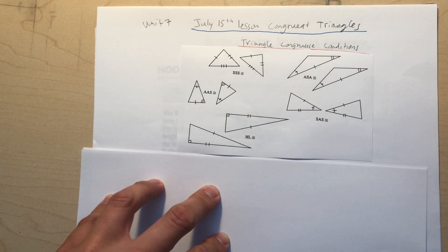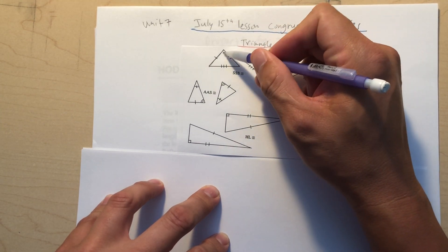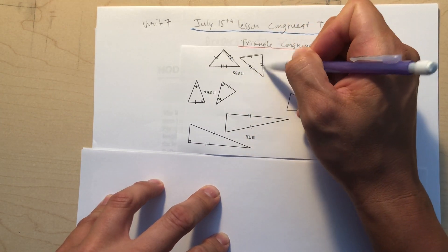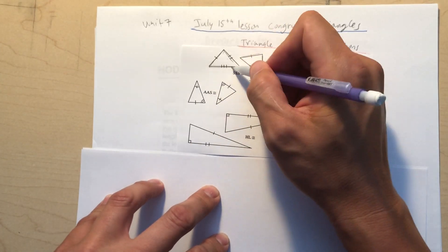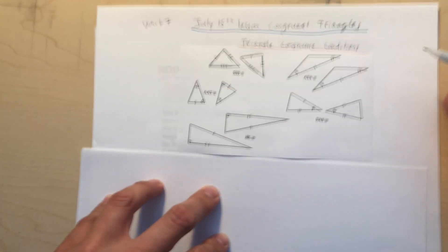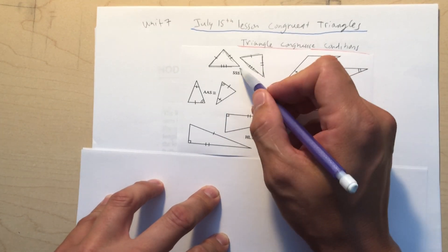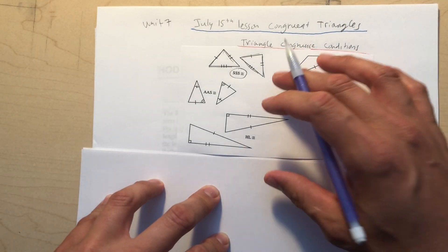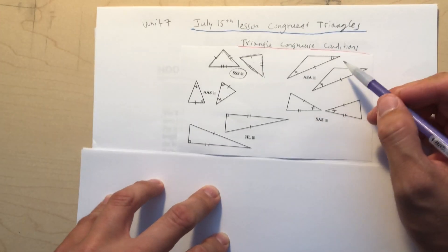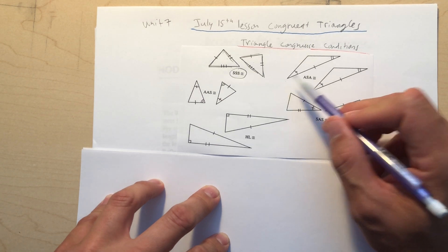If all three sides of one triangle are congruent to all three sides of another — same length — then those two triangles are congruent. That's called Side-Side-Side (SSS). This is also in your book.